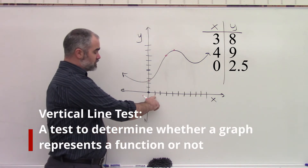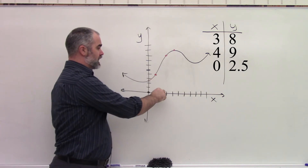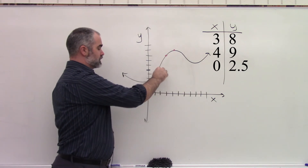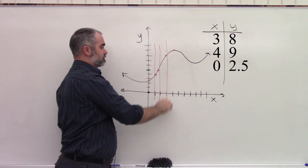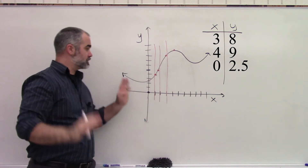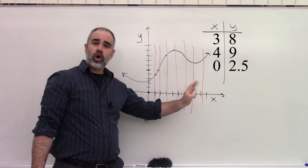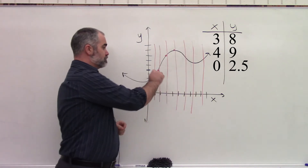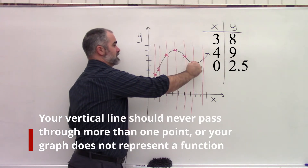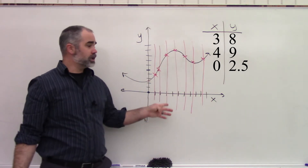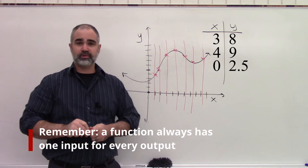You can even take a ruler and trace it along your graph. You should always see exactly one point where your vertical line hits your graph. Because what that means is there's exactly one output for every single input — and that's how you determine a function.